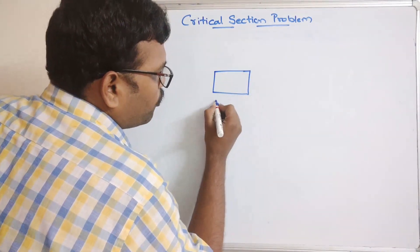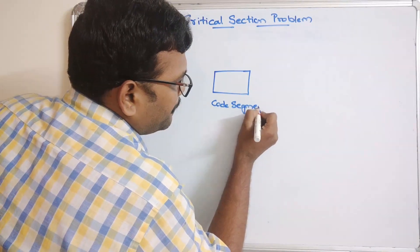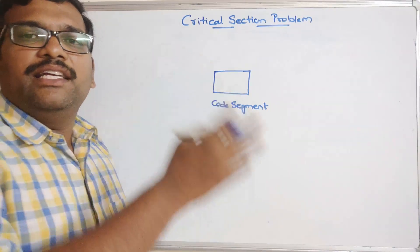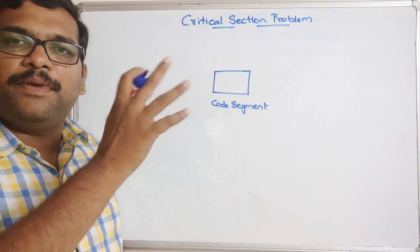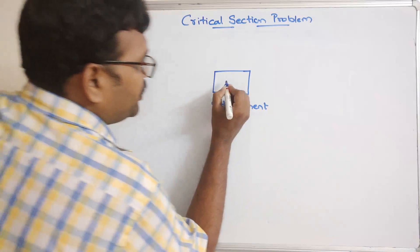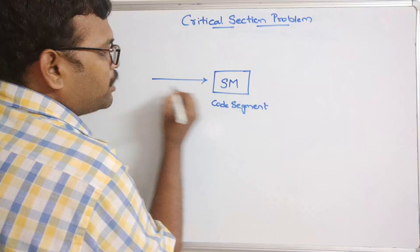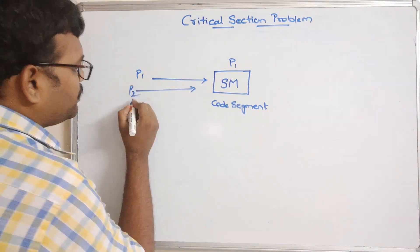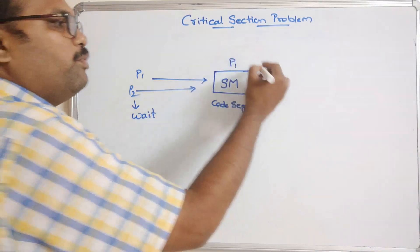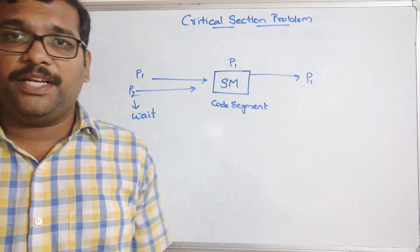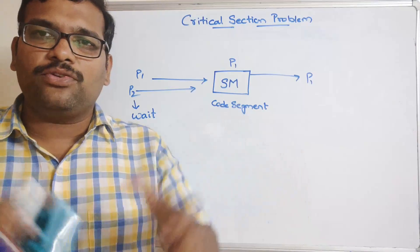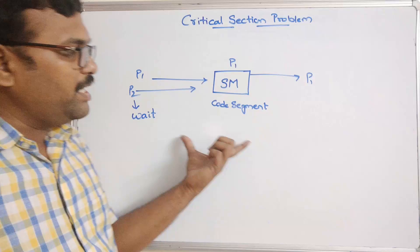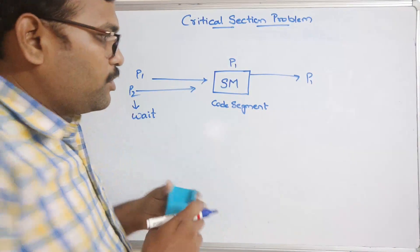A critical section is a code segment which allows only one process to execute. If one process is being executed, another process has to wait until the first process completes its execution. This is a shared memory — if there are two processes, P1 and P2, and P1 is executing, then P2 has to wait until P1 completes. After completion, P1 deallocates all the resources bound to that process, and only then does P2 take control of the processor.